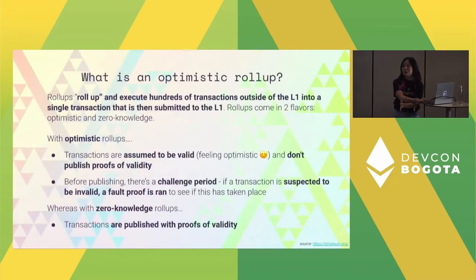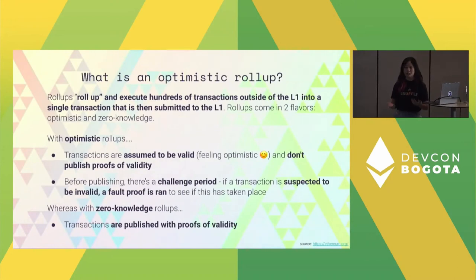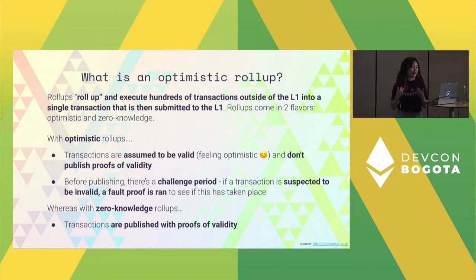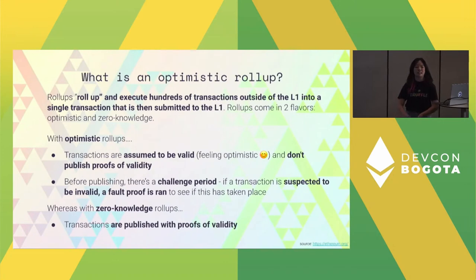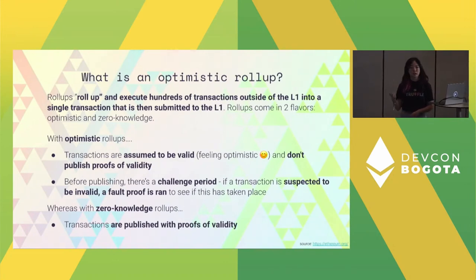Next, we're going to talk about optimistic rollups because that's what we're focusing on today. I am not going to touch on zero knowledge — there are so many talks at Bogota about zero knowledge, so talk to them, not me. To briefly touch on optimistic rollups: rollups, pretty self-explanatory — you roll up a bunch of transactions and submit and post it once to the L1. This comes in two primary flavors: optimistic rollups as well as zero knowledge.